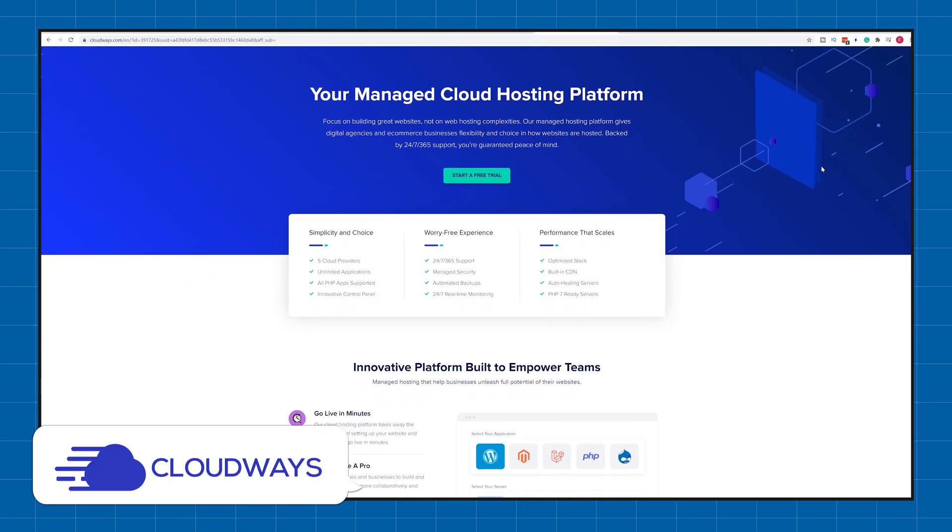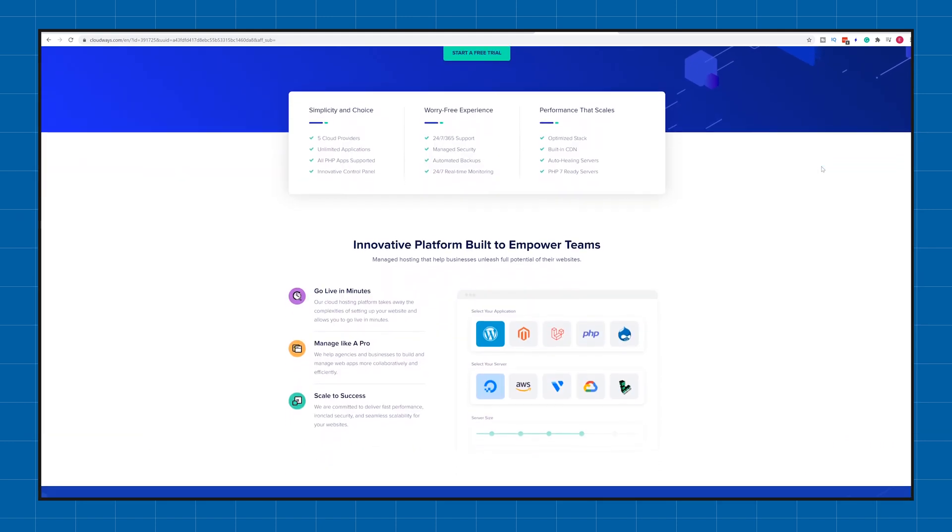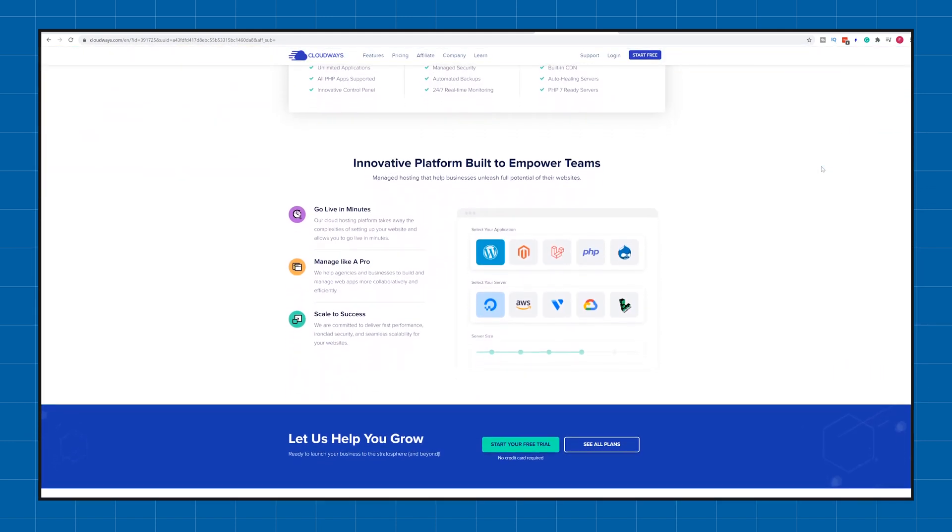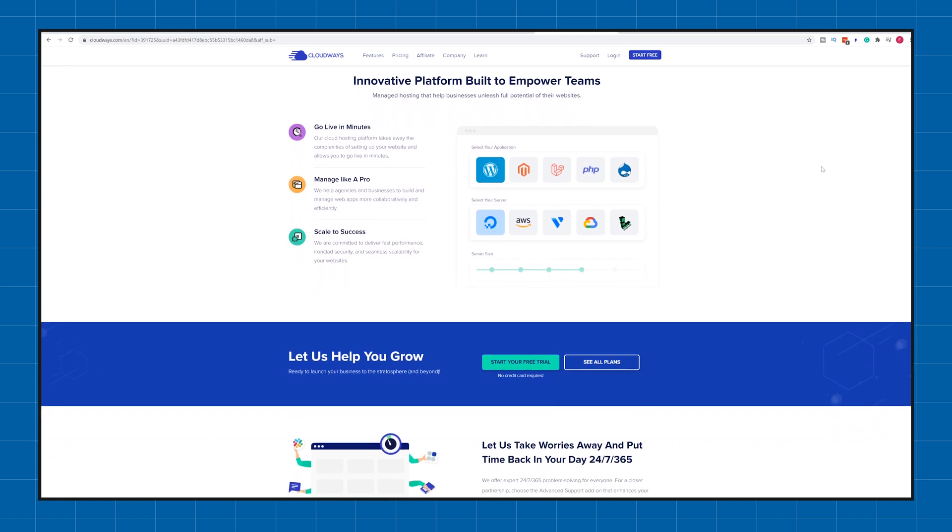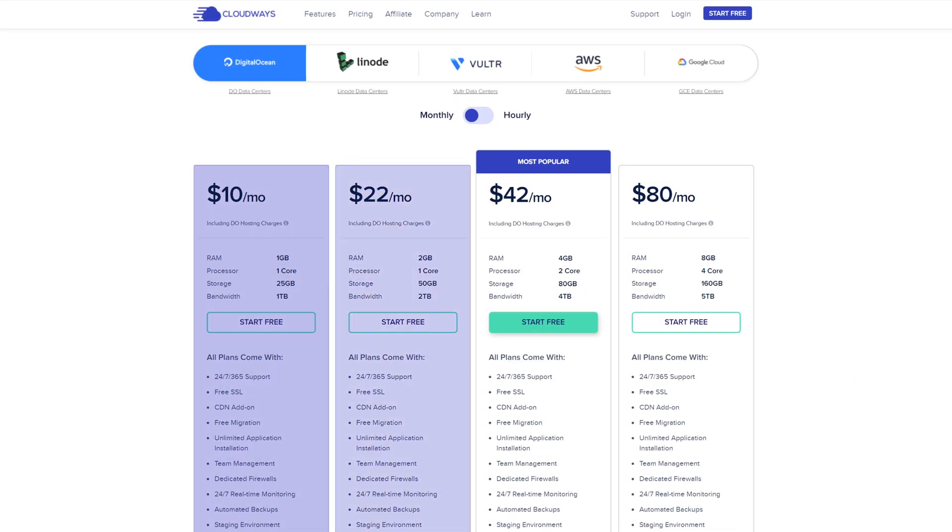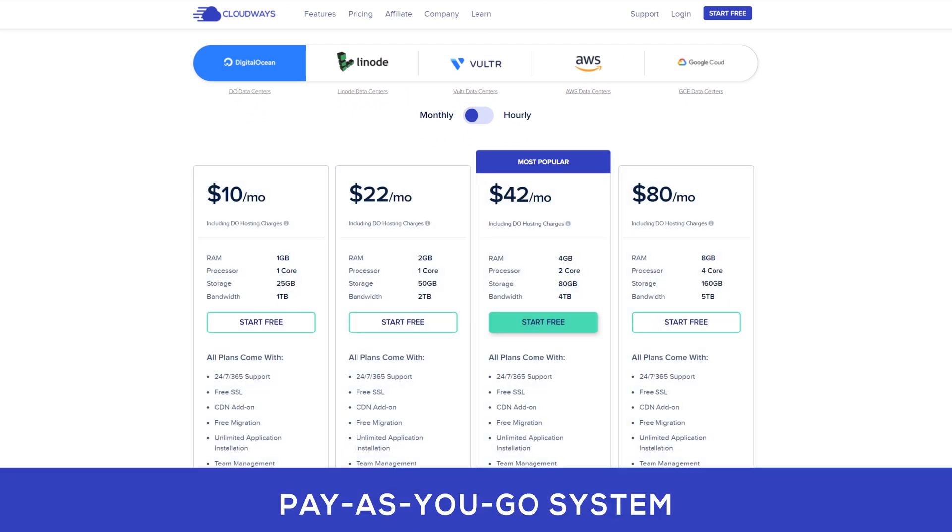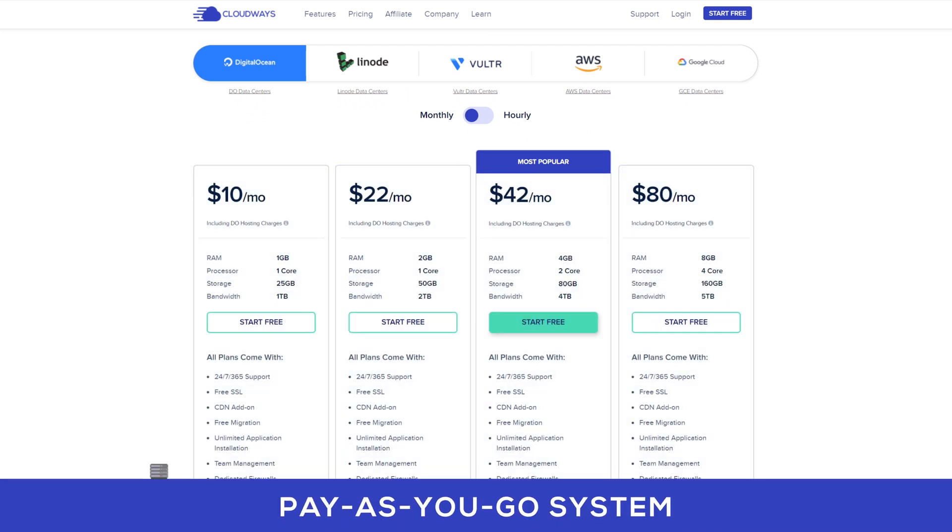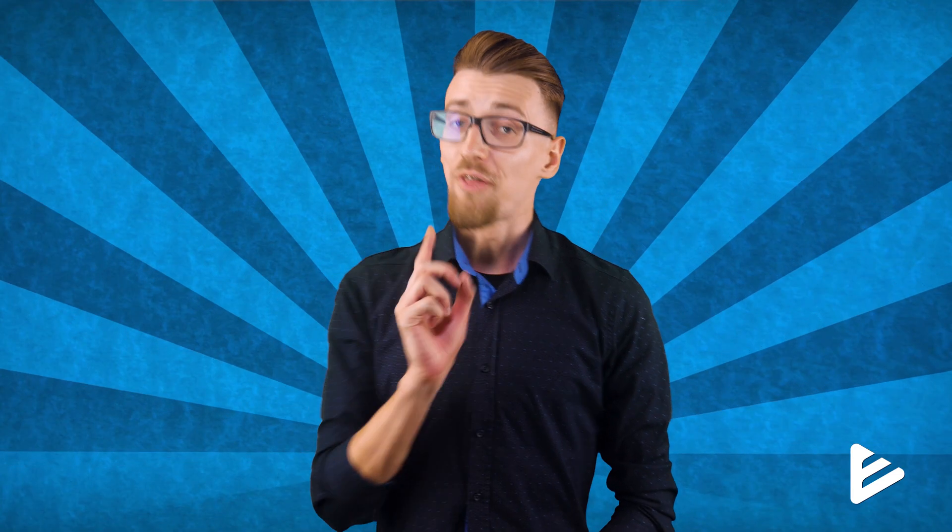Cloudways is probably a company that you've never heard about and they have quite an interesting business model that allows you to get very effective usage of the money you're spending on hosting. Even though they advertise monthly or yearly prices, it's actually a pay-as-you-go system. Basically you buy a server and pay based on how much space you take up on that server and how many users you're getting. That means you're never in a situation where you have to pay for resources you're not using.